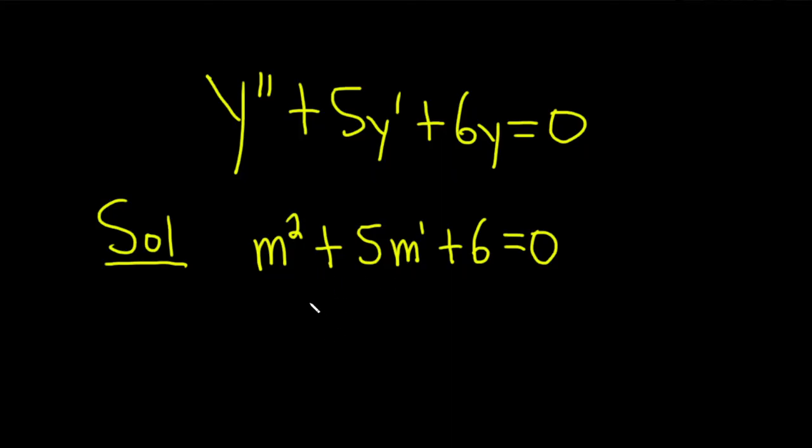So it looks like this is going to factor. We have an m here, and an m here, and m times m is m squared. So we need two numbers that multiply to 6, but add to 5. So I think 2 and 3 are going to be some good candidates, because 3 times 2 is 6, 3 plus 2 is 5. And these are both plus signs. Very nice.